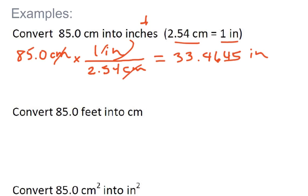If we want to round this off to three significant digits, my three digits are 3, 3, and 4, but because that's a 6, it's going to round up. So my answer will be 33.5 inches. And that's my answer.